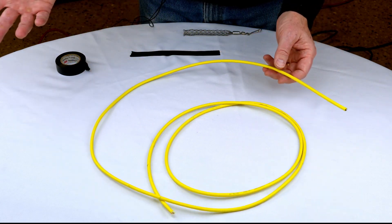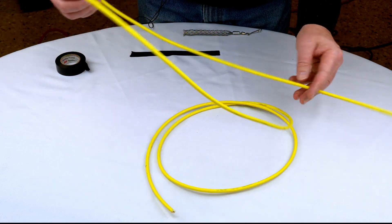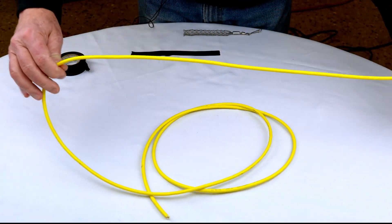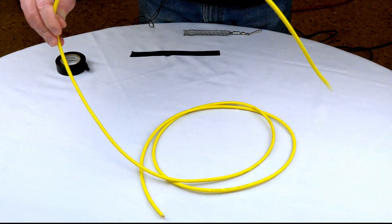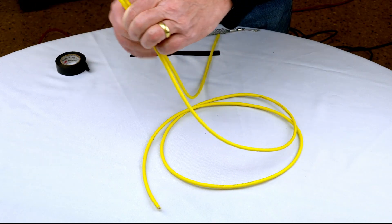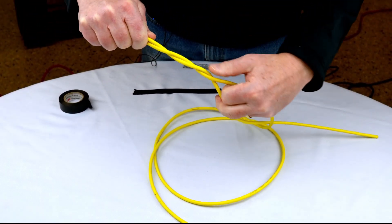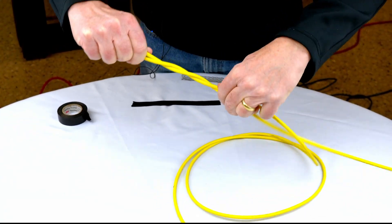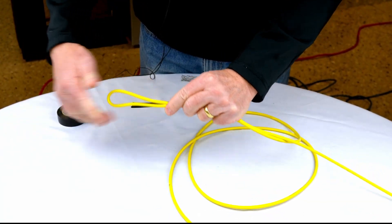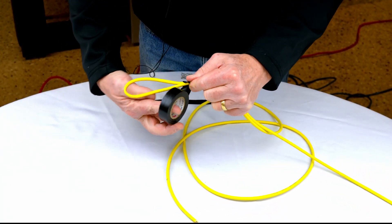What you're going to want to do quick and easy is just form yourself a loop. Go about 18 inches to two feet back, form yourself a loop, wrap that tail around itself a number of times, and then tape it up.